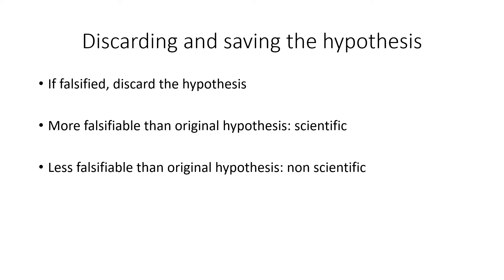If you hang on to a falsified hypothesis without explanation, you're no longer behaving scientifically. The only way to save the hypothesis is to put forward an explanation — but whatever explanation you offer must be more falsifiable than the original hypothesis. If it's less falsifiable, it's non-scientific. So when there's been a failed prediction, any saving explanation has to be more easily testable.